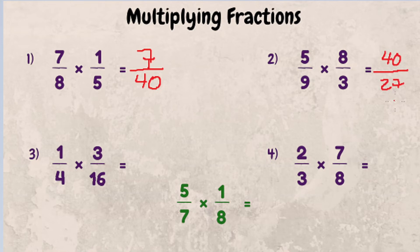So 40 over 27 is our answer. But if you wanted to show this in mixed number form, you would simply divide 27 into 40, which goes one time. And the remainder would be 13 over our denominator of 27.